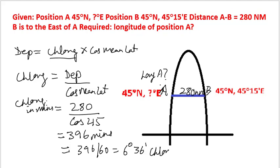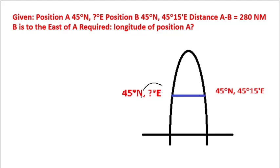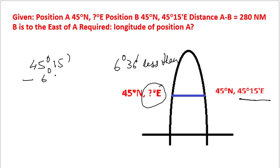We now know that this point, that is longitude of A, is 6 degrees 36 minutes less than this longitude because it is to the west. So we will subtract 6 degrees 36 minutes from this value, which is 45 degrees 15 minutes minus 6 degrees 36.